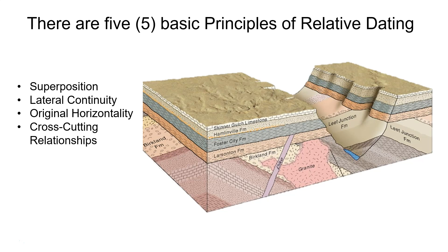One of the most commonly used principles other than superposition is cross-cutting relationships. Any rock layer that cuts across a pre-existing rock layer is younger than the rock it cuts across. If you look at the pink dike — a representation of a rhyolitic dike — it cuts across the Larsenton, the granite, the Birkeland, and an unlabeled brown layer. The principle of cross-cutting relationships indicates that dike is younger than all those rock layers it cuts across. But notice it does not cut across the Foster City formation, so that dike is actually older in relative terms than the Foster City formation.